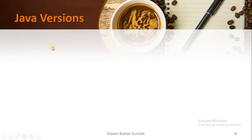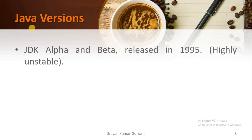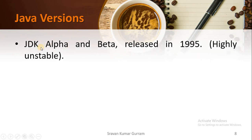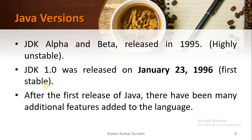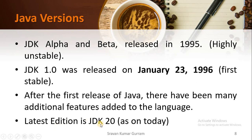Let us see the different versions released up to today. In the year 1995, the first software released was JDK Alpha and Beta. JDK stands for Java Development Kit, but it was highly unstable with many unstable APIs. After that, JDK 1.0 was released in 1996, which was the first stable version. After that, so many versions were released, and in each release, Sun Microsystems or Oracle implemented more and more features. The latest edition is JDK 20.